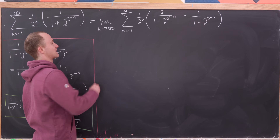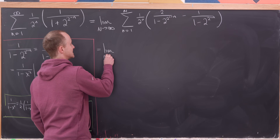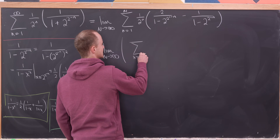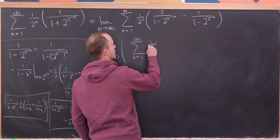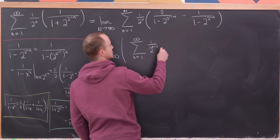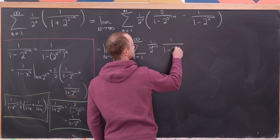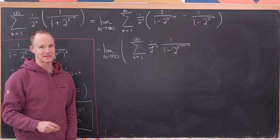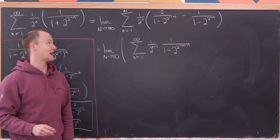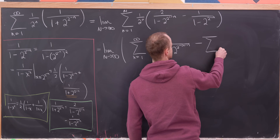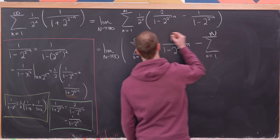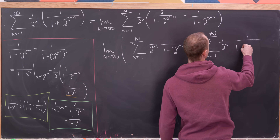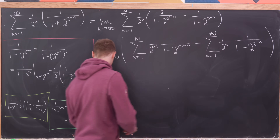To really see the telescoping, I'd like to split this into two sums — we're allowed to do that because inside the limit we have finite sums. The first sum becomes the sum as n goes from 1 to capital N of 1 over 2 to the n minus 1, times 1 over 1 minus 2 to the 2 to the minus n minus 1, factoring out the minus sign to make the exponents match. Then we subtract the sum as n goes from 1 to capital N of 1 over 2 to the n times 1 over 1 minus 2 to the 2 to the minus n.